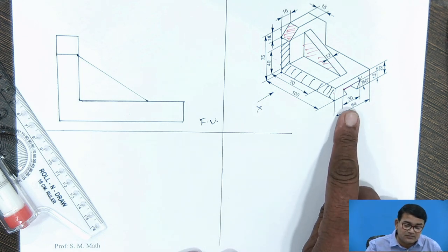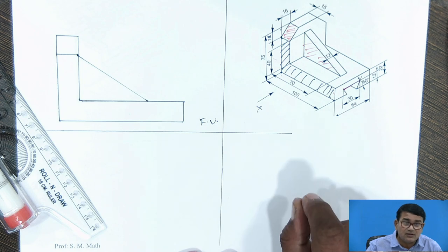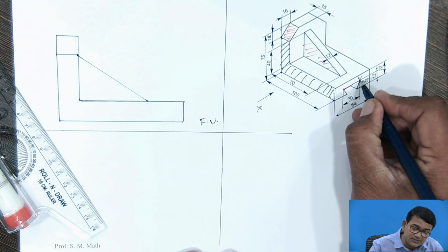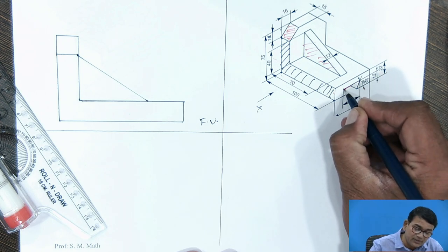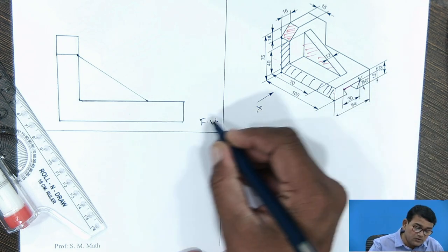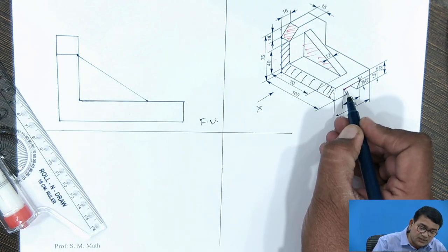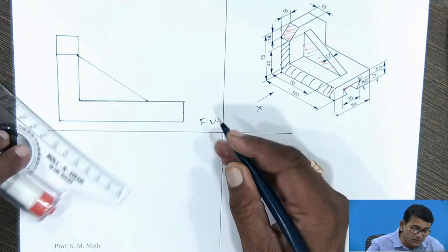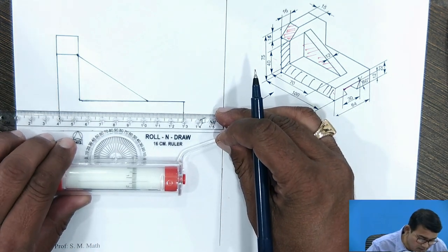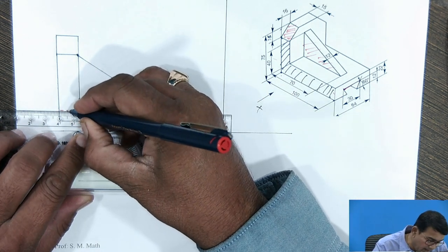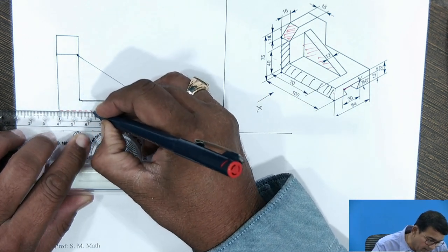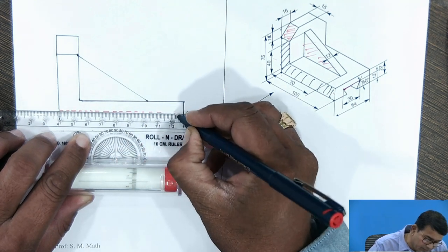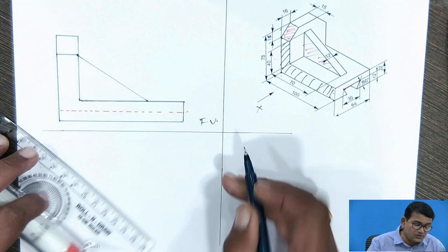The hidden surface is shown as a dotted line. There are two surfaces: this edge and this edge, but one is exactly behind the other. So you have to draw one dotted line from top — starting to end of the surface. The vertical height is given as 12 mm, so from 12 mm you draw the dotted line from start to end. This is all about the front view.